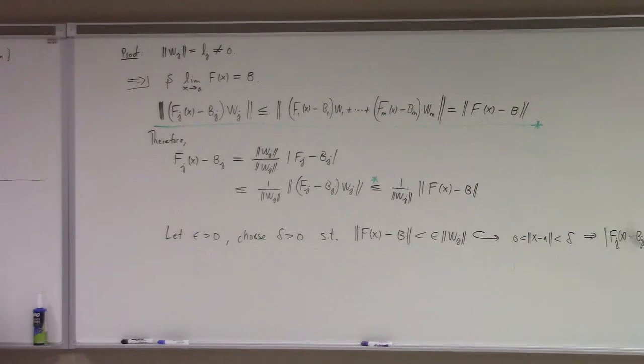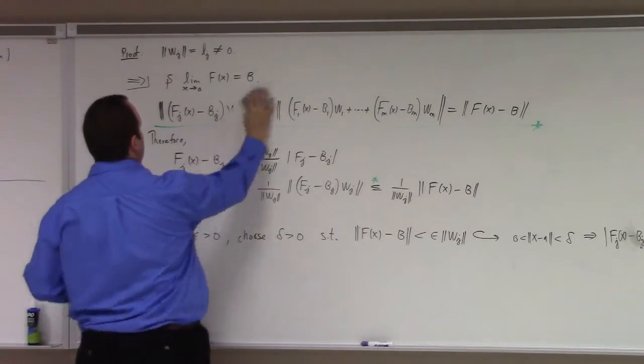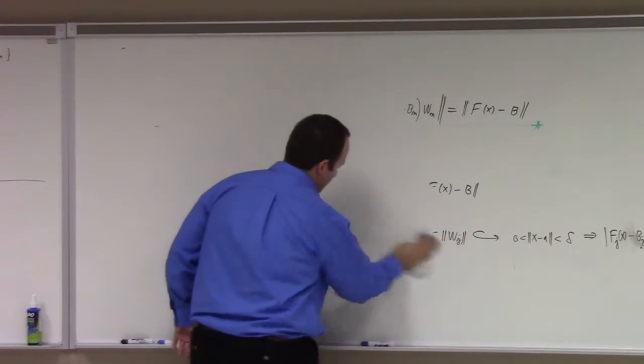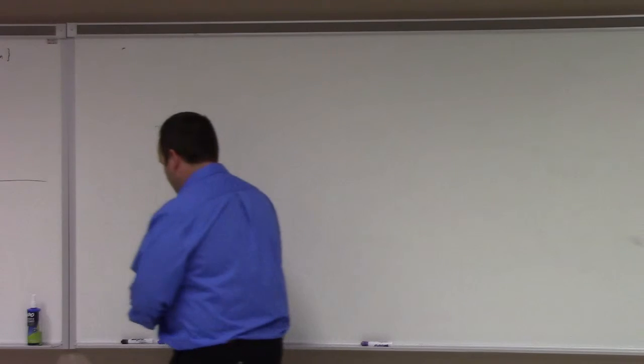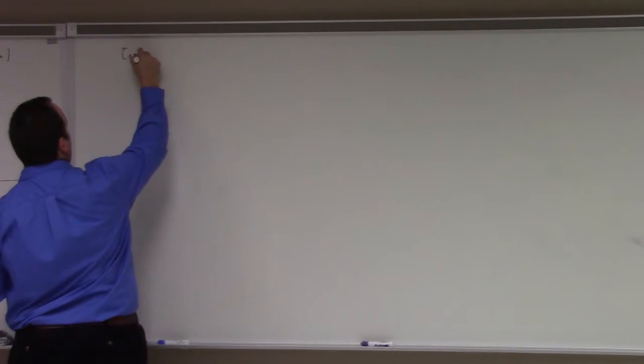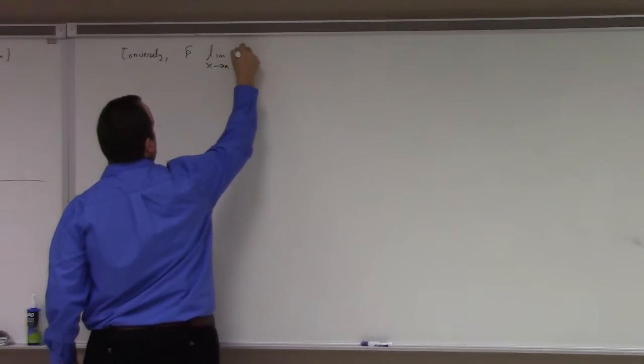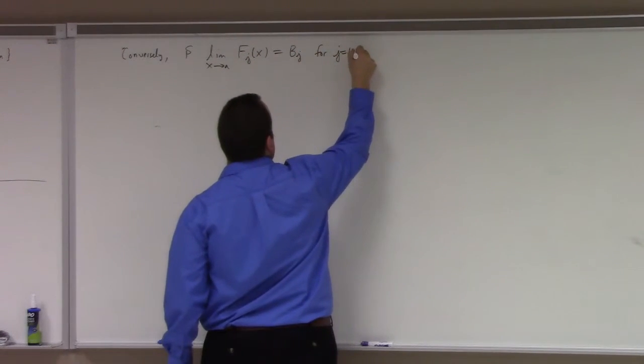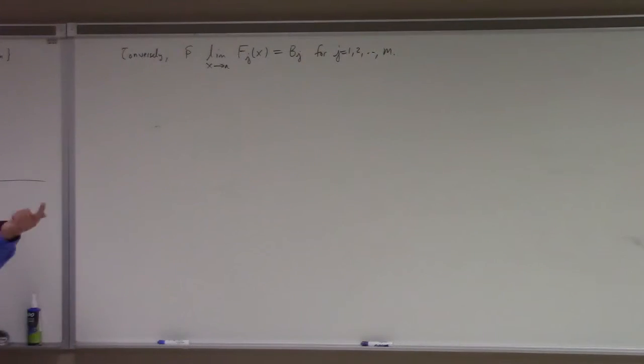So let's look at the converse direction. Converse direction of this. So what do we do? We assume that all of the limits. Conversely, suppose that the limit as x goes to a of f sub j of x is equal to b sub j for j equals 1, 2, dot dot dot, m. By the way, there was nothing specific about the j in my last argument, so it held for all j.